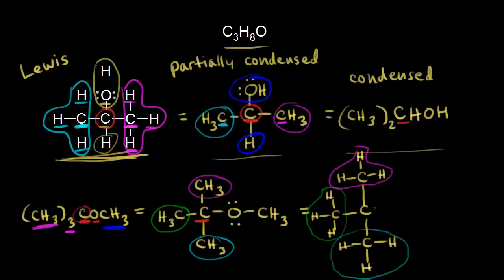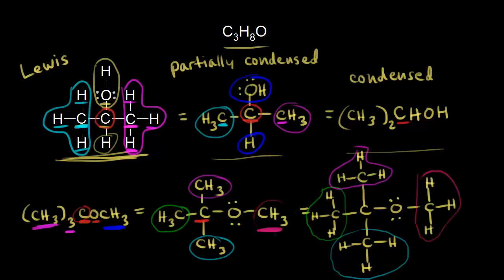Next we draw the oxygen with two lone pairs of electrons. The oxygen is bonded to another CH3 group — a carbon with three bonds to hydrogen. That's our last CH3 group, completing the full Lewis dot structure.